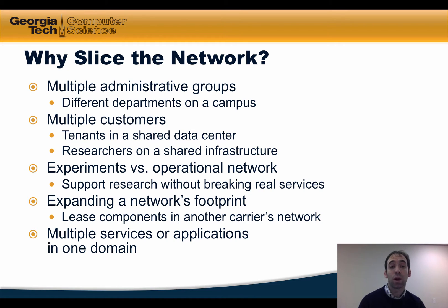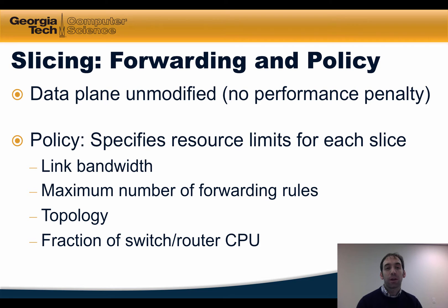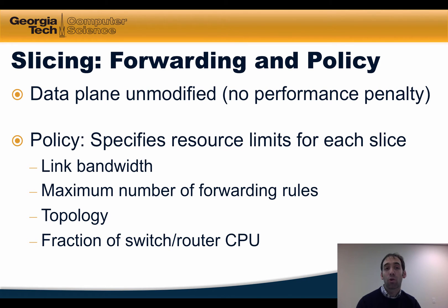Virtualization can also be used to expand a network's footprint and allow multiple services or applications to operate in the same domain. With slicing, the data plane operates essentially unmodified, so there's no performance penalty — it merely implements forwarding according to what the control plane tells it. The slicing policy, which sits above the data plane, determines which control slice can control different parts of the data plane. A slicing policy specifies resource limits for each slice, such as the link bandwidth, the maximum number of forwarding rules, the topology, or the fraction of switch or router CPU that the control slice should have access to.